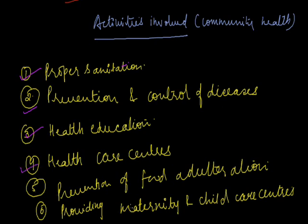Many primary health care centers, district hospitals, community health centers, and medical colleges have been established for maintaining community health. Prevention of food adulteration means preventing degradation of the quality of food. Providing maternity and child care centers helps reduce mortality rate among children. Provision of family planning advice and medical care to school-going children is a must for enhancing community health.